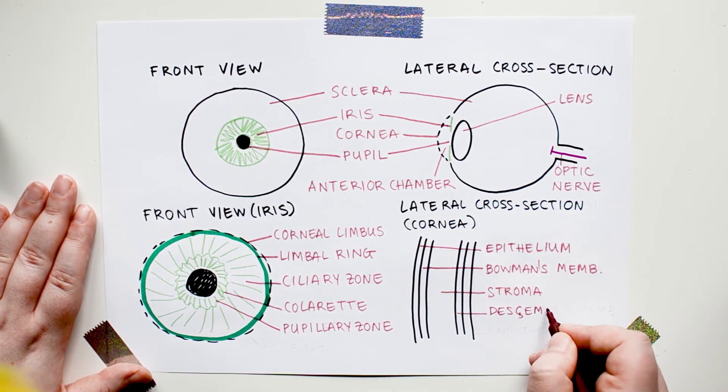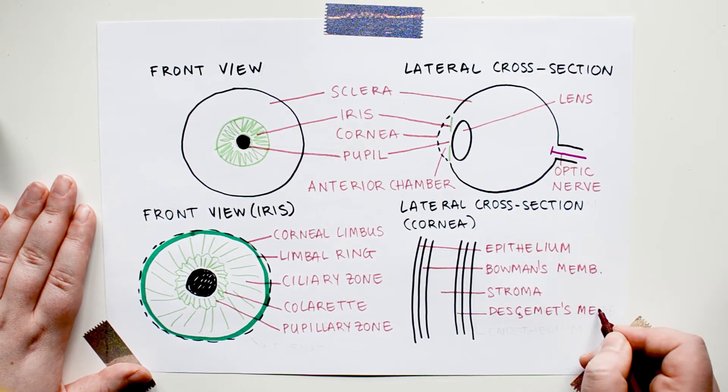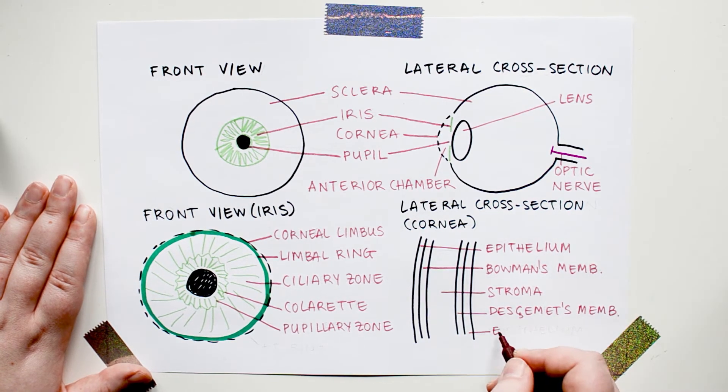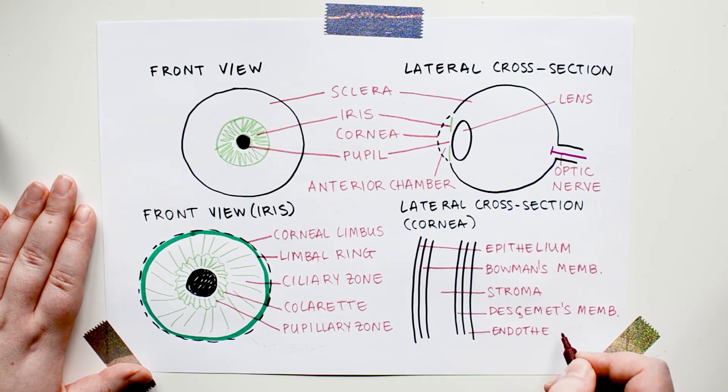A thin layer called Descemet's membrane, or the posterior elastic lamina. And finally, a thin layer called the endothelium.